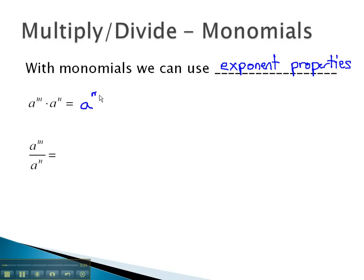If you remember, the product rule says we can add the exponents on the base. The quotient rule says we will subtract the exponents on the base. Let's take a look at some problems where we do just that.